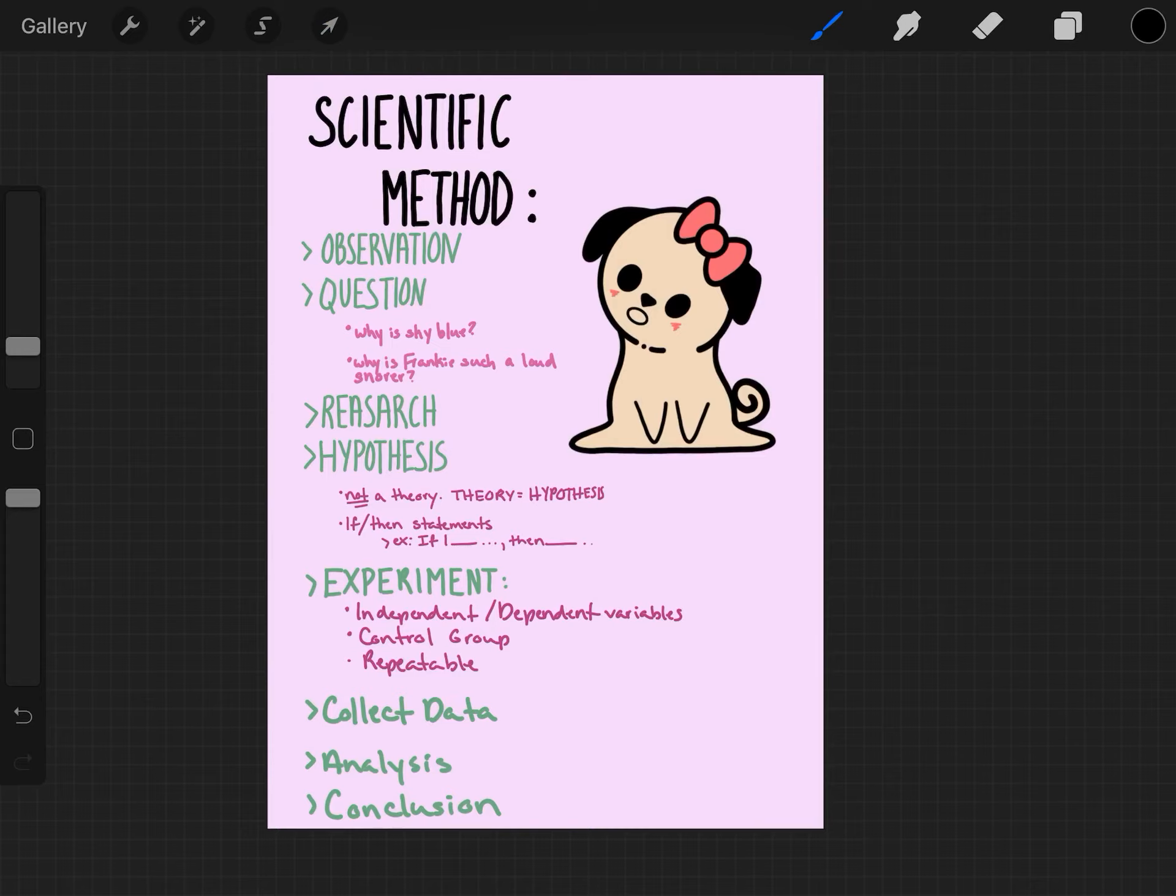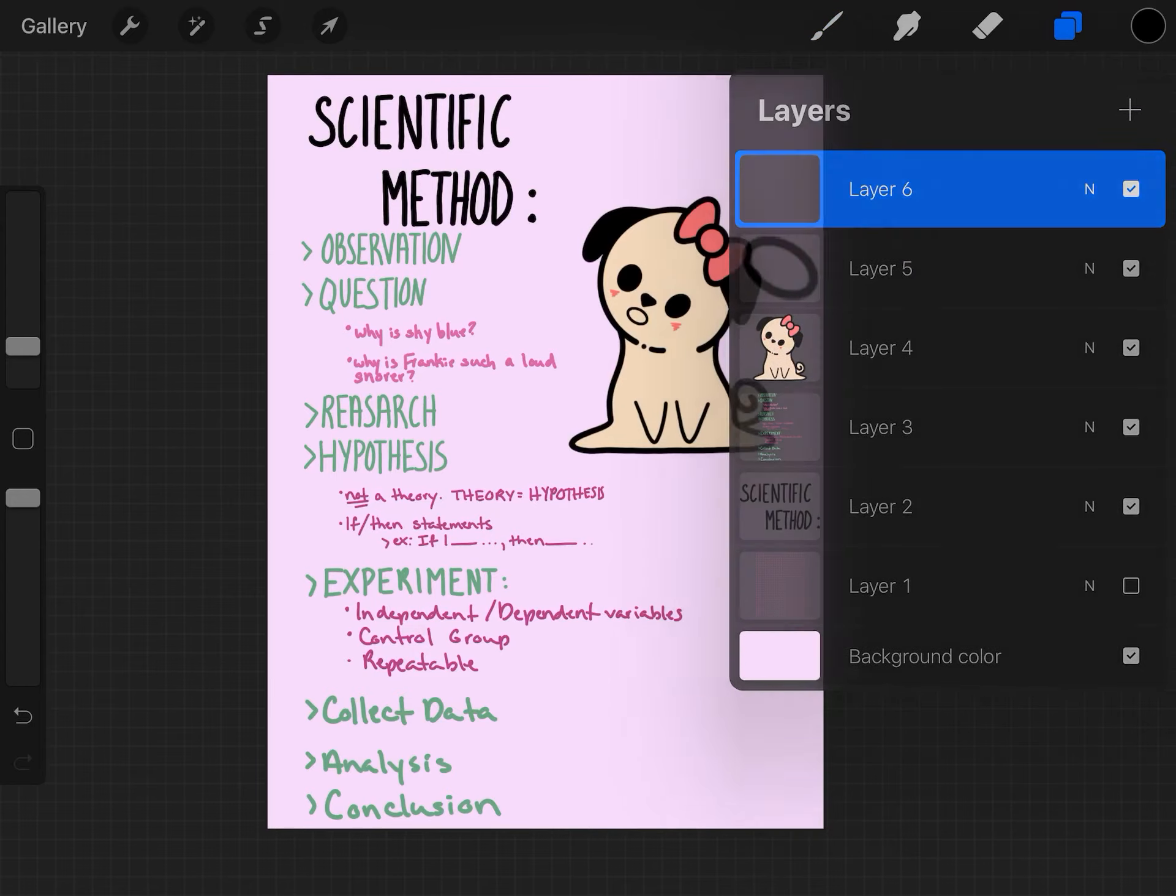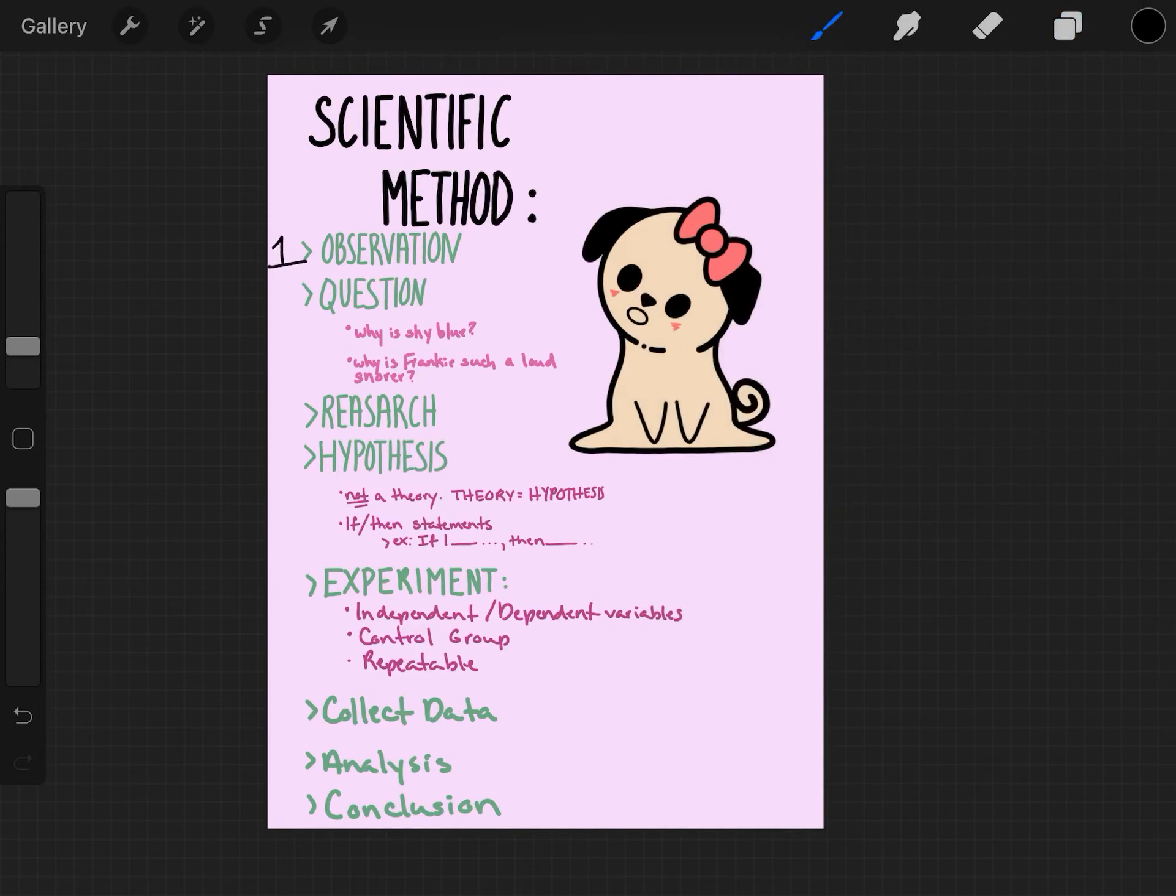Alright, so your first step of the scientific method is an observation. This is something you observe about the world, such as hey, the sky is blue. Then you come up with a question from something that you observe, such as why is the sky blue? Or why is Frankie, or Pepper in my case, such a loud snorer?